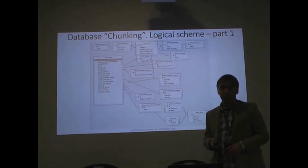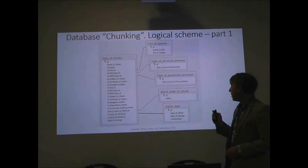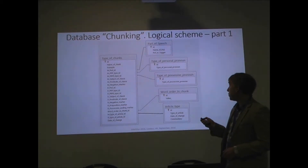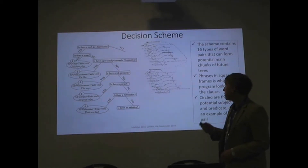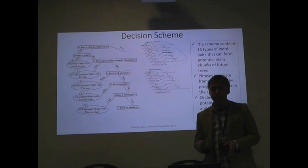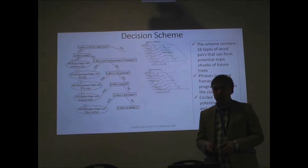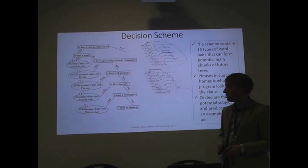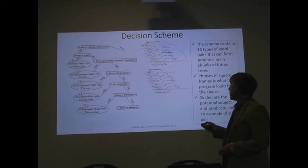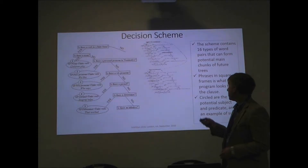On this slide you can see the logical scheme of our database. Here is the table which represents the types of chunks. On this slide it represents the decision scheme with which we choose a subject-predicate pair from all chunks. This scheme contains 16 types of word pairs which can form potential main chunks of future trees. Phrases in squares are conditions, and phrases in circles are subject and predicate.